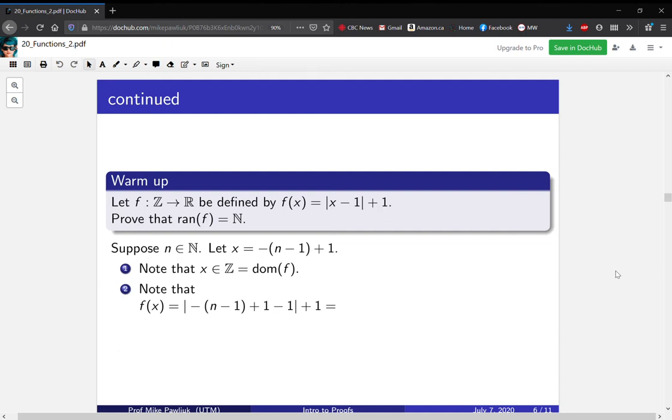Now we do some cancellation. And we end up with this part right here, |-(n - 1)|. The smallest n can be is 1, so n - 1 is 0 or larger. So the absolute value just gets rid of the minus sign. So this simplifies to n - 1 + 1. These two cancel and just give us n.